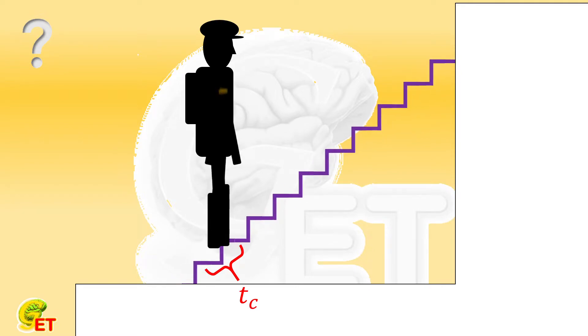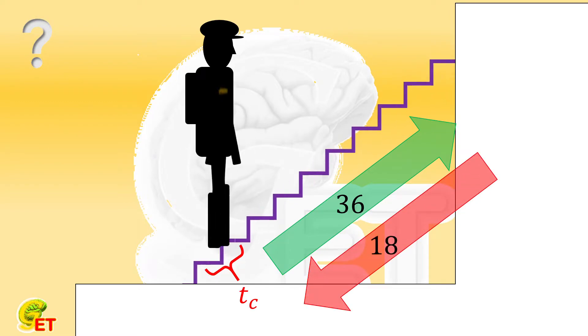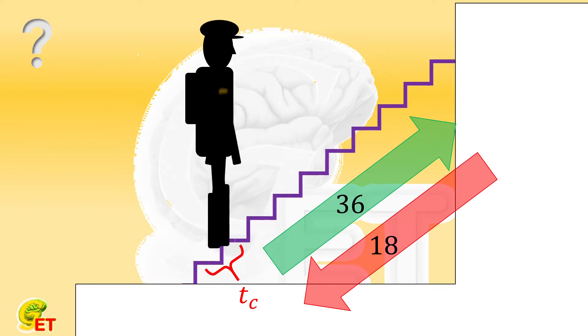When he used this escalator to go up one floor, he walked a total of 36 steps. And it takes for him 18 steps to walk down this floor. So if the escalator doesn't move, how many steps would it take for him to walk up this floor? Why not give a try, and we will come back soon.